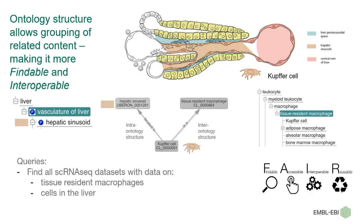The structure of the ontology is particularly useful for improving findability. For example, a Kupffer cell can be found by looking for tissue-resident macrophages, or macrophages in general, up the class hierarchy, or going up the location and part hierarchy. You can use it to find annotations in SCEA and EMBL datasets in the liver, or combinations of those.